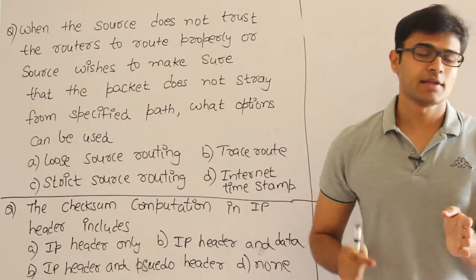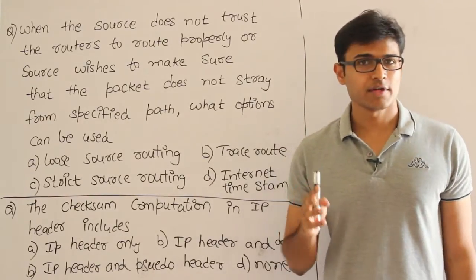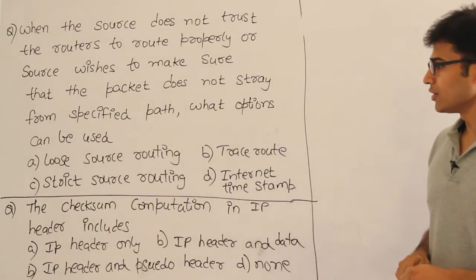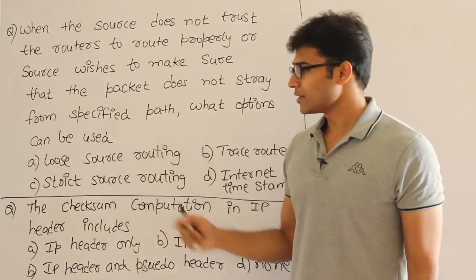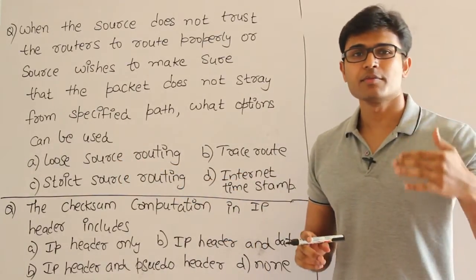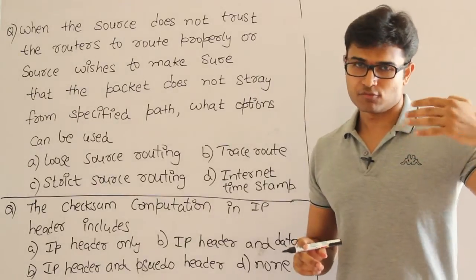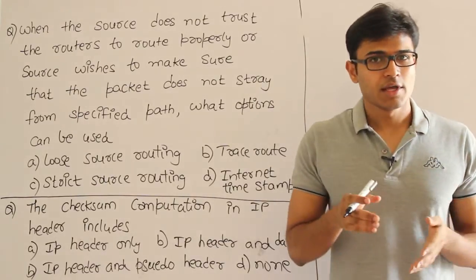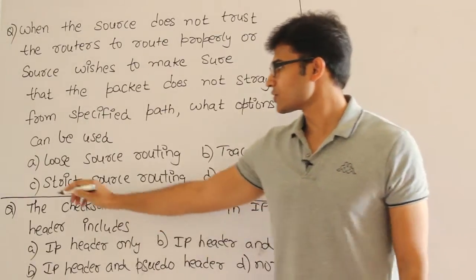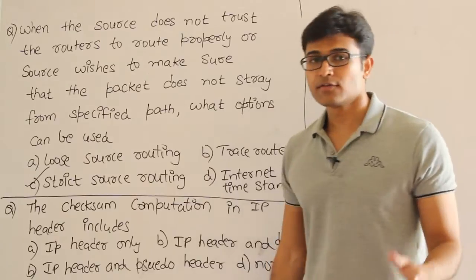Then what is the option the source could use? I told you that in the option there is something called source routing. So loose source routing is not definitely the option, because if you put the loose source routing, some of the intermediate routers will not be taken, or you cannot specify the exact path.